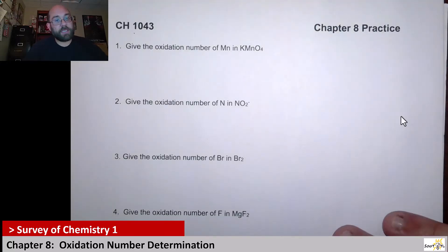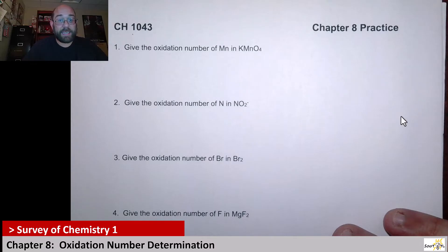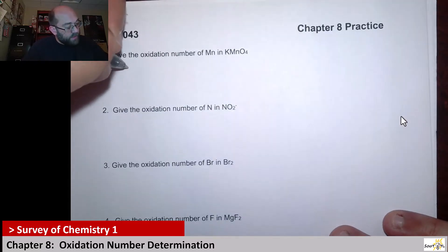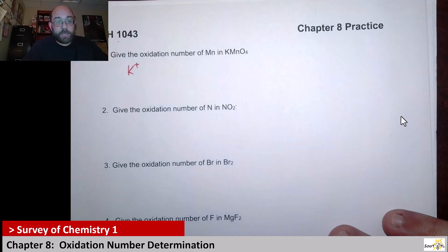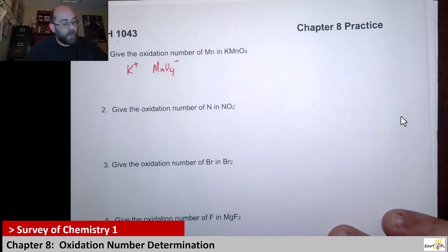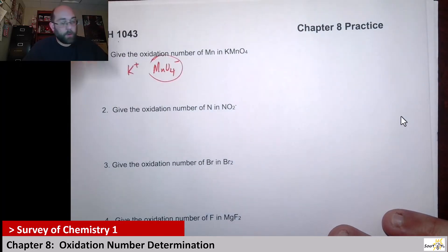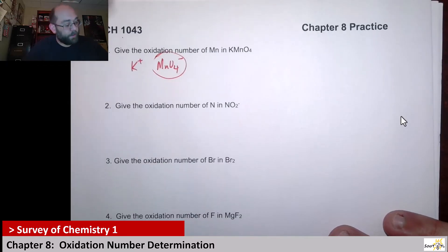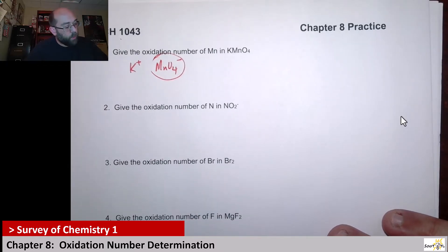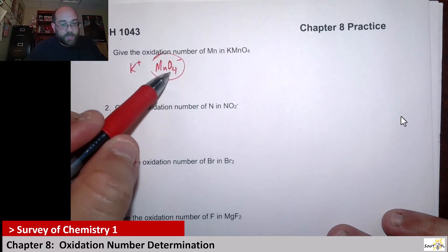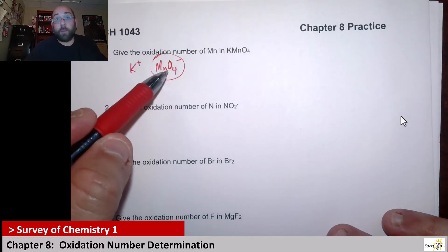Our first one says give the oxidation for manganese in KMnO4. So one thing to recognize is this is an ionic compound, so you should look at this and say, oh, that's K+ and then the permanganate polyatomic ion is MnO4-. So we can just focus on this part; we don't even have to work on the potassium ion.